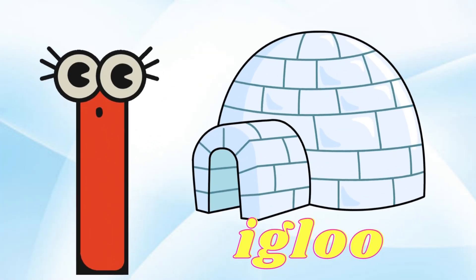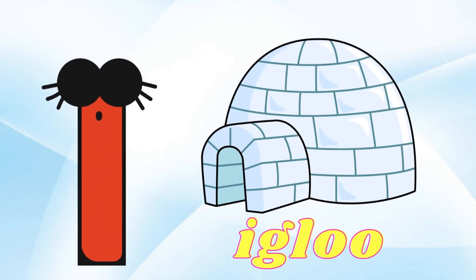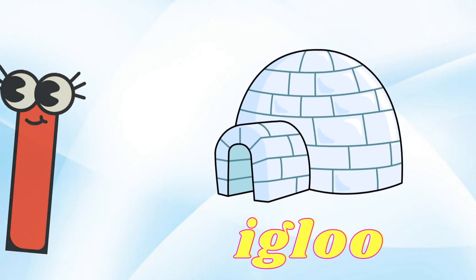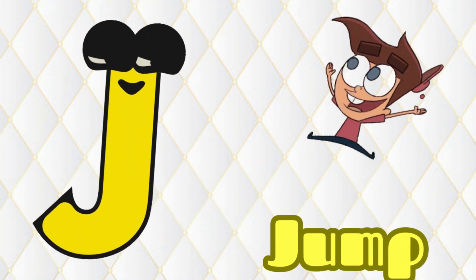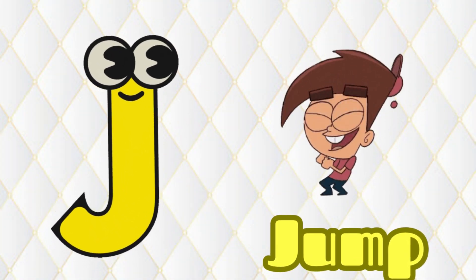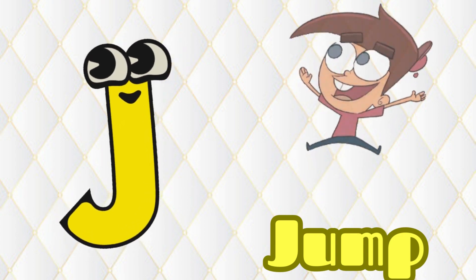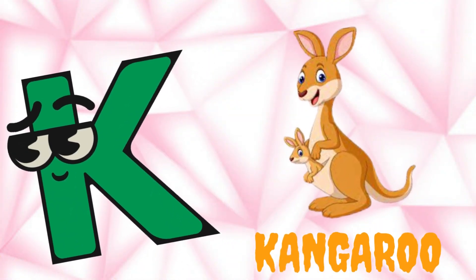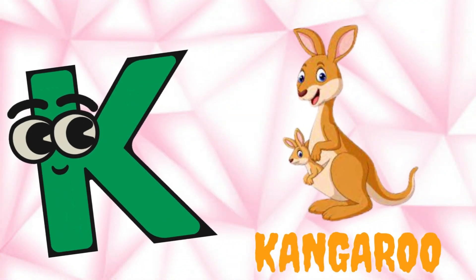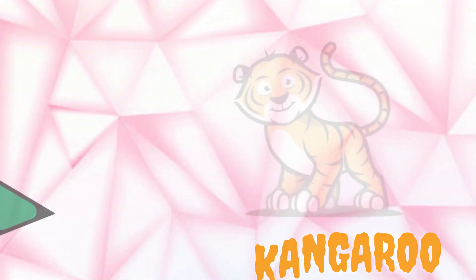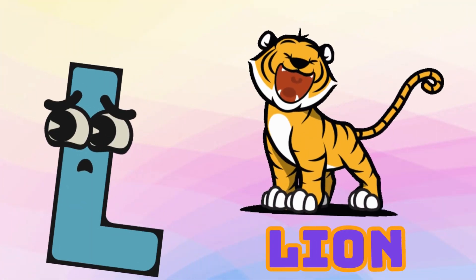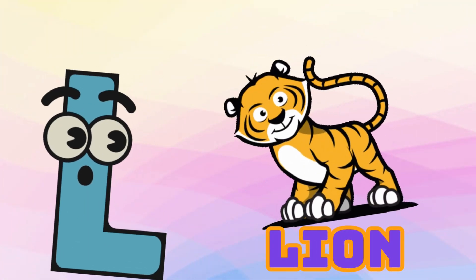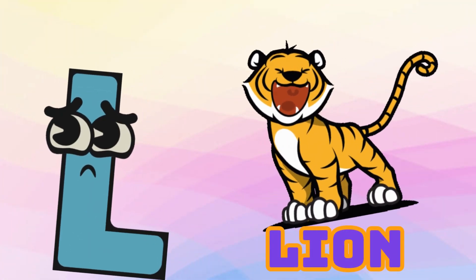I is for Igloo, I-I-Igloo. J is for Jump, J-J-Jump. K is for Kangaroo, K-K-Kangaroo. L is for Lion, L-L-Lion.